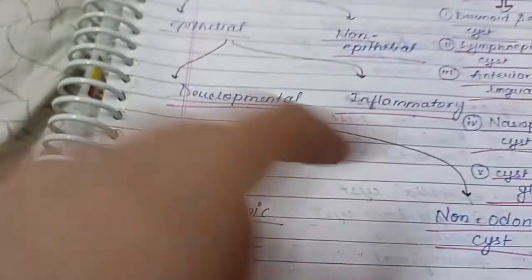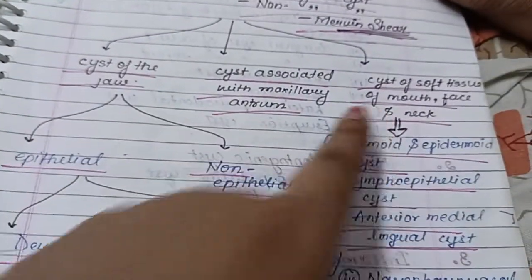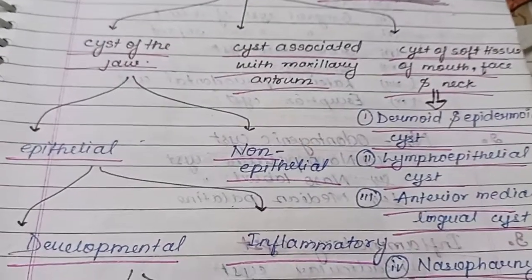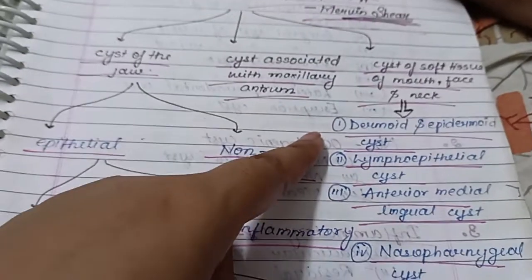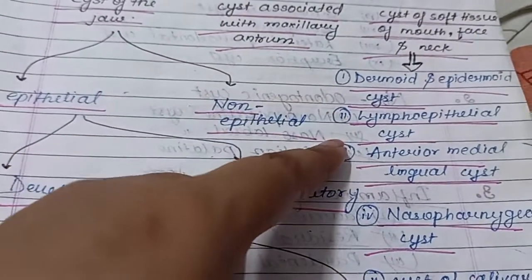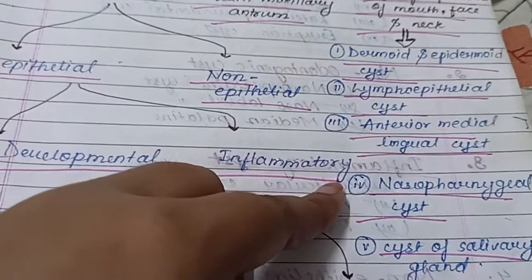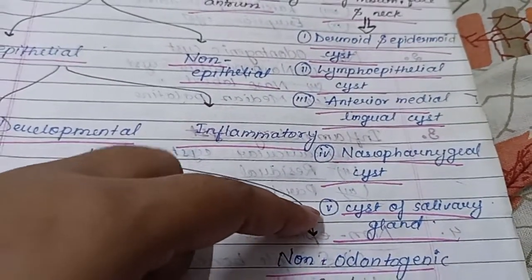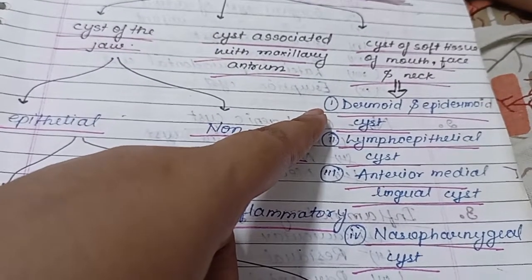We will discuss these two topics further. Cysts of the soft tissue of the mouth, face, and neck include dermoid and epithelial cysts, lymphoepithelial cysts, anterior and medial lingual cysts, nasopharyngeal cysts, and cysts of the salivary gland.